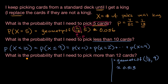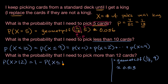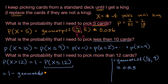Now let's do one more. What is the probability that I need to pick more than 12 cards? Pause the video and see if you can figure this one out — what function would you use on your calculator and how would you set it up? Well, the probability that x is greater than 12 is equal to one minus the probability that x is less than or equal to 12. We can use the cumulative distribution function again: one minus geometcdf of one over 13, up to and including 12.